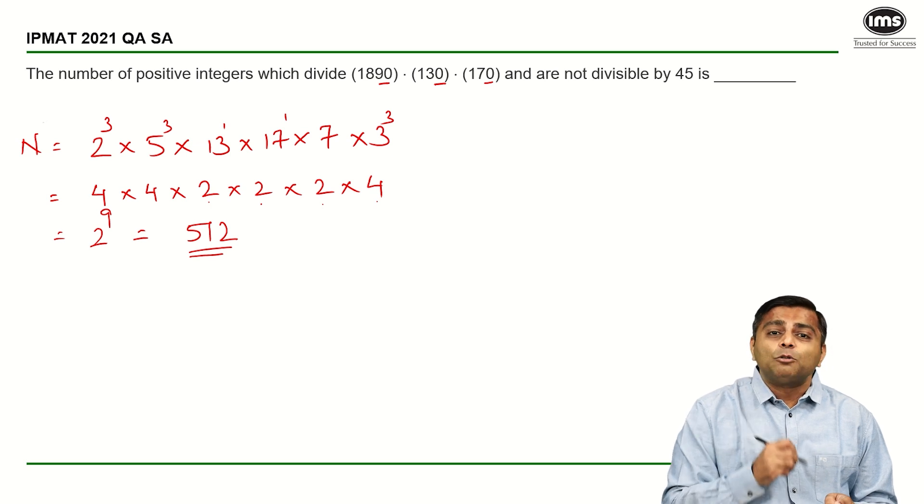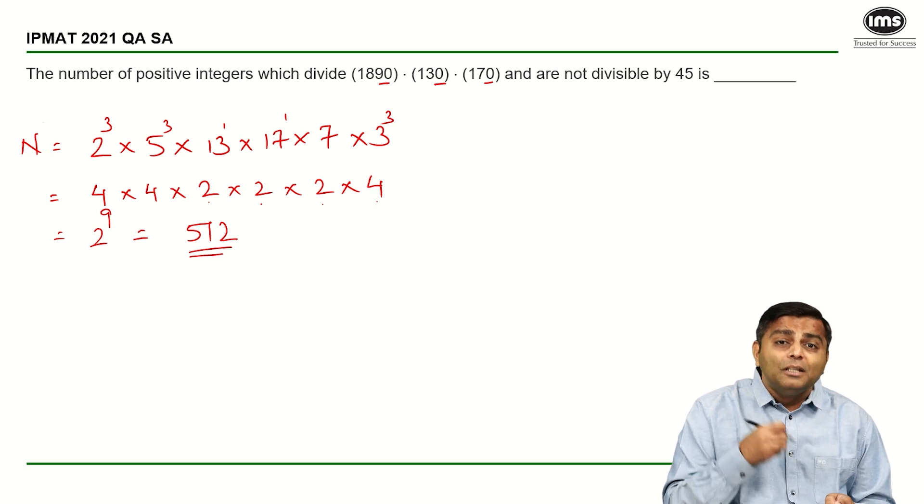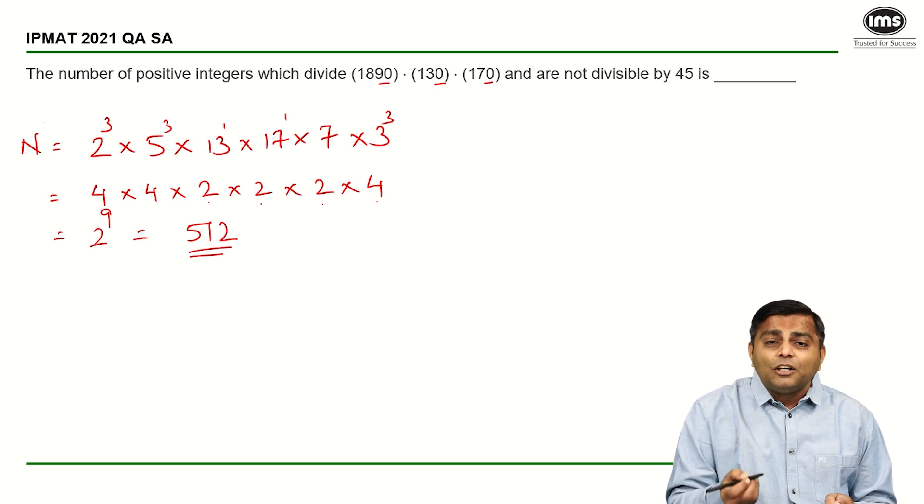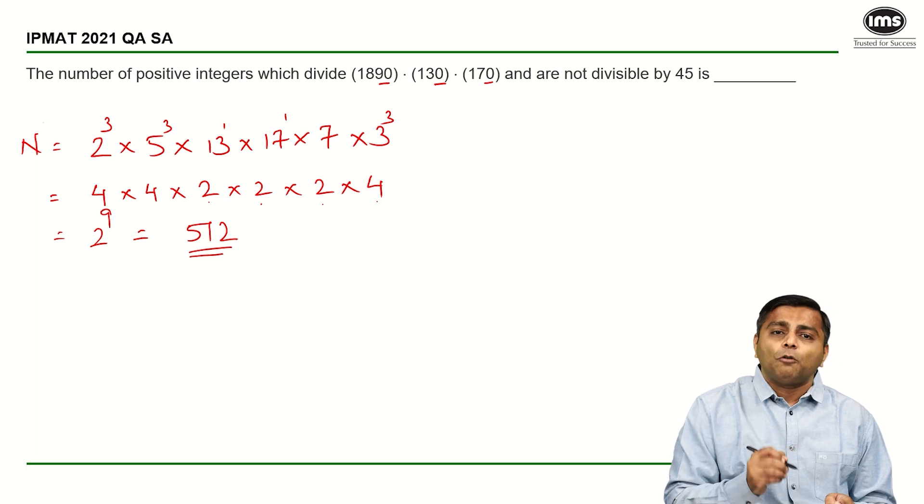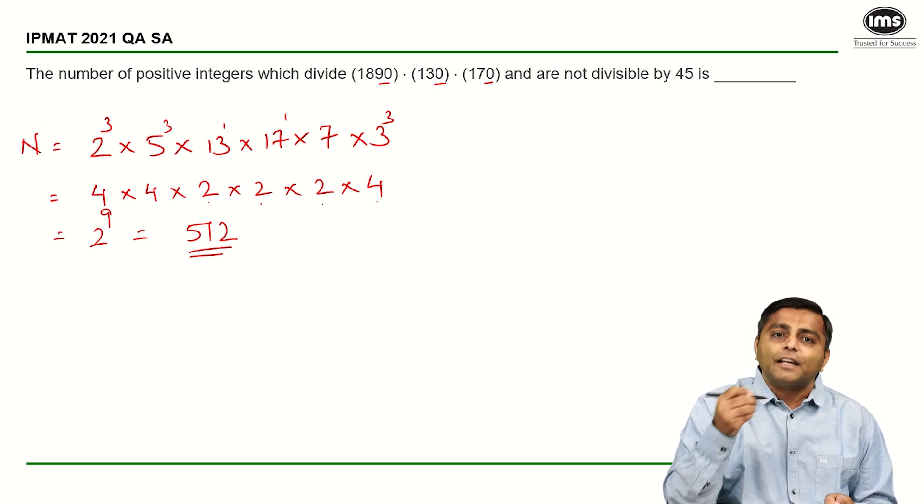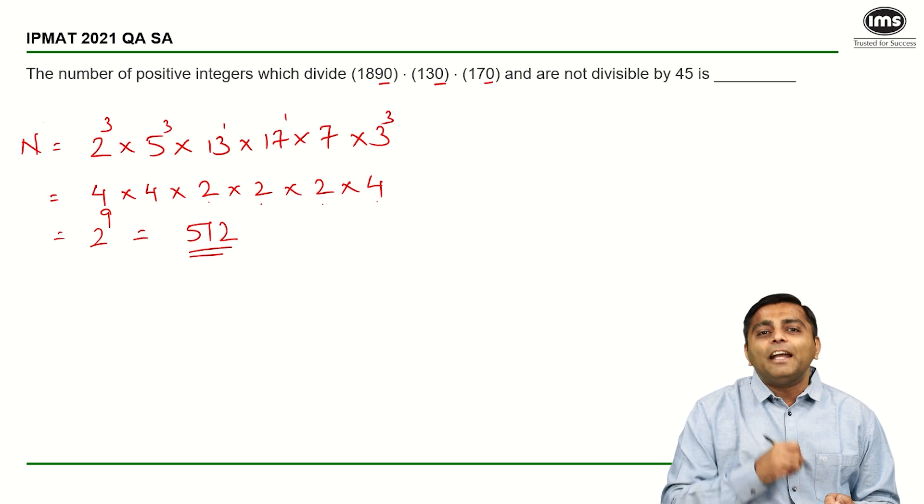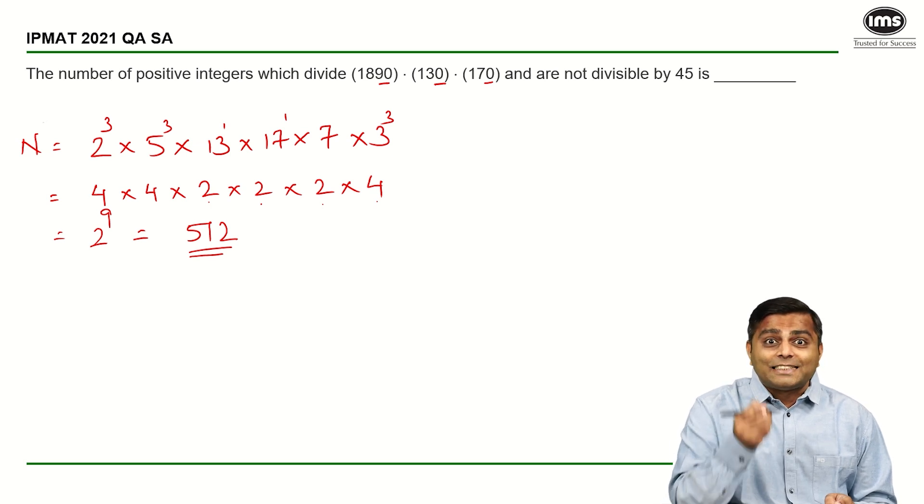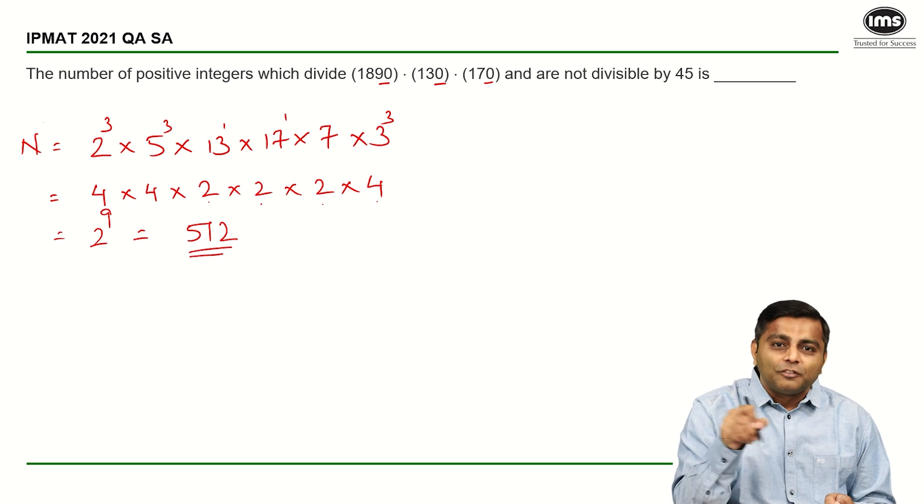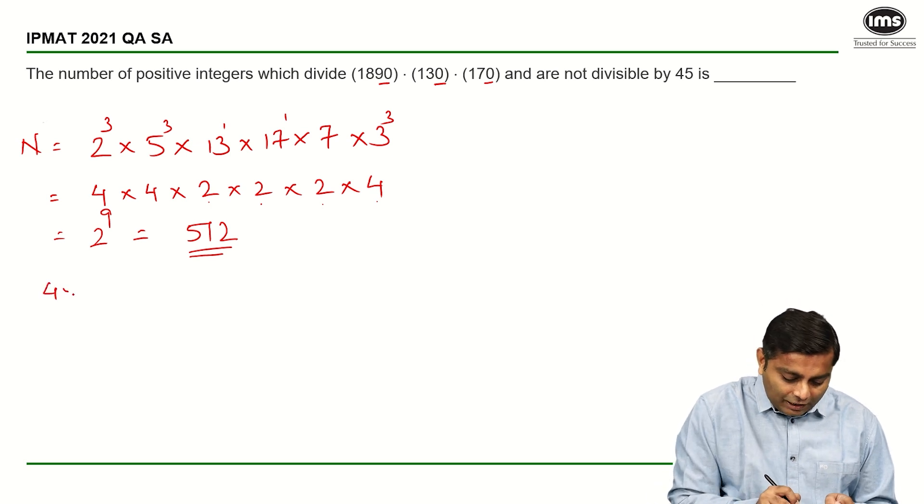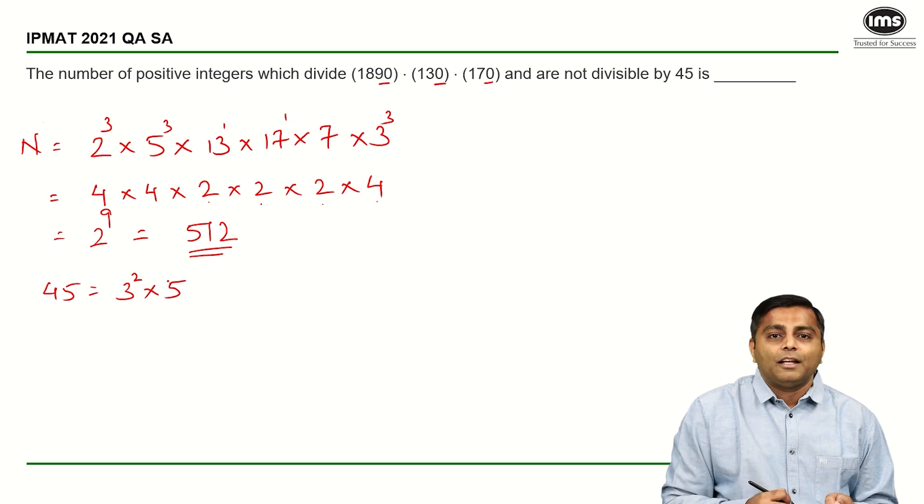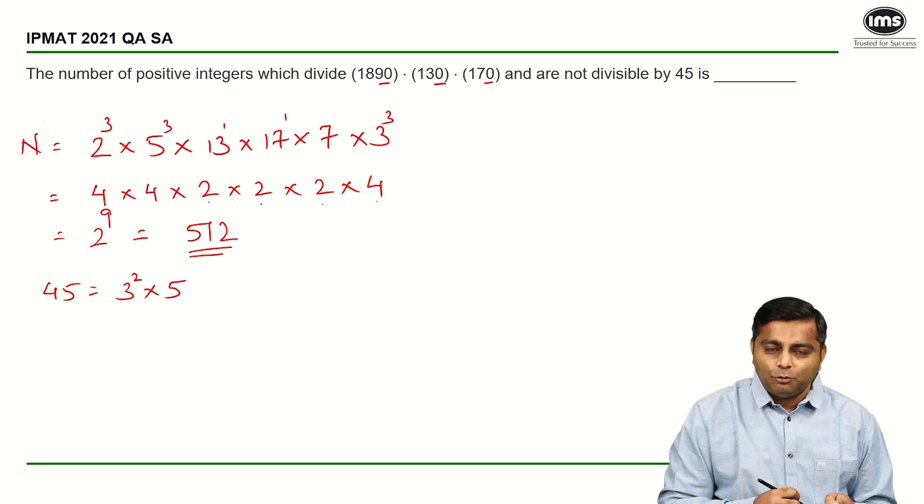Now the next step, we need to find out factors which are multiples of 45. Factors which are multiples of 45, what you should do? You should just divide that number by 45 and again find the factors. Dividing a number by 45 is as good as, if you remember, you just cancel or rather subtract the powers of the factors of 45. So you know that 45 is nothing but 3 square into 5, 9 into 5, 45. So 3 square into 5.